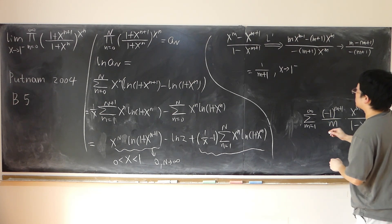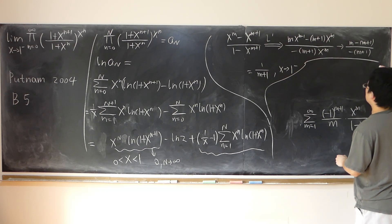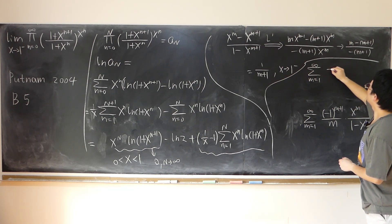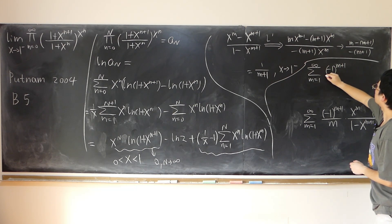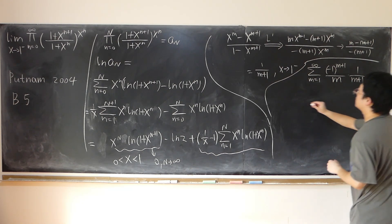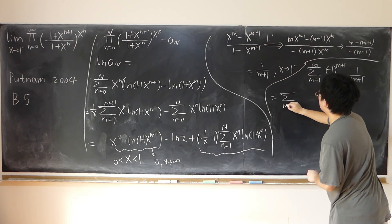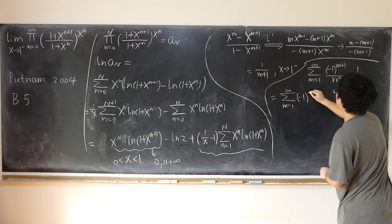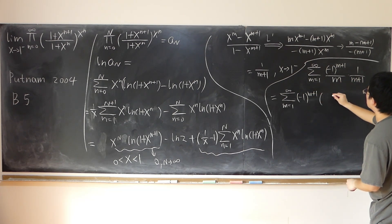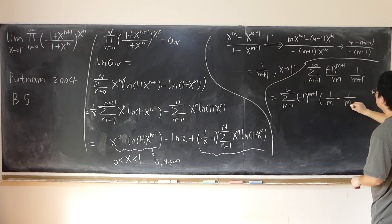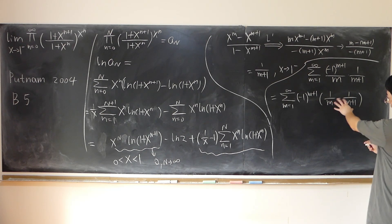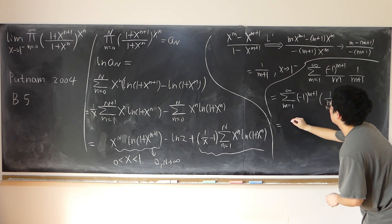So now we just work out this infinite sum. The sum m from 1 to infinity of negative 1 to the m+1 over m times this part, which becomes negative 1 over n plus 1. Now let's rewrite this sum: m from 1 to infinity of negative 1 to the m+1. I'm going to separate the fraction: 1 over n minus 1 over n plus 1. This equals 1 over n times n plus 1 — easily verifiable by partial fractions. So this becomes two sums.